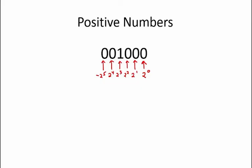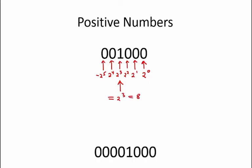To figure out the value of the number 001000, we see that there is a single 1 which is in the 2 cubed position, so this number is equal to 2 cubed which equals 8. Note that if I wanted to represent the same number 8 using a larger number of binary bits, I would simply add some leading 0's to my positive number.